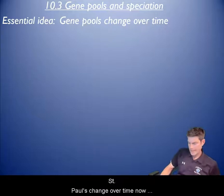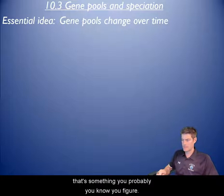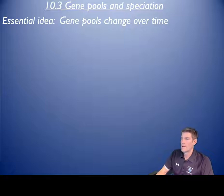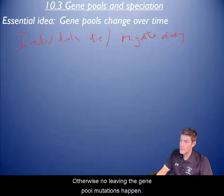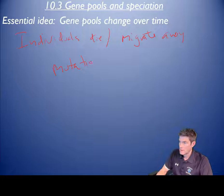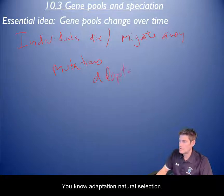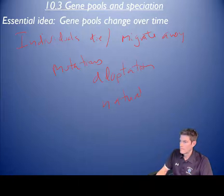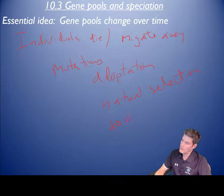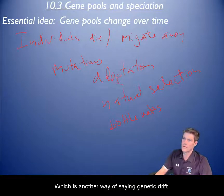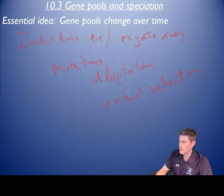All right, last thing: essential idea — gene pools change over time. Individuals die, they leave, die, migrate away, otherwise leaving the gene pool. Mutations happen, adaptation, natural selection — all of these things. Bottlenecks, which are another way of saying genetic drift, and I'll show you an example later.